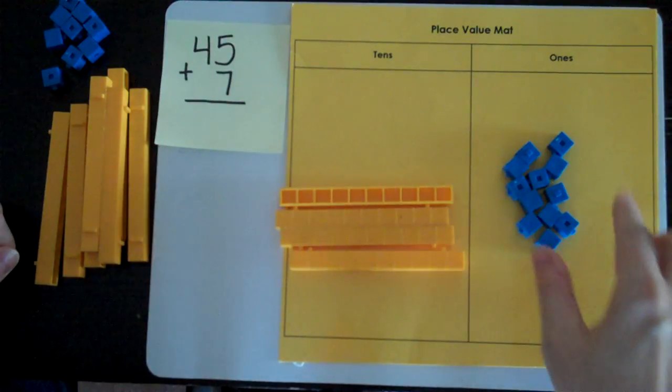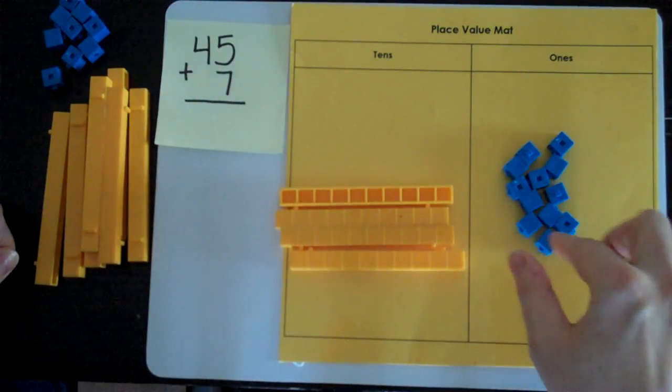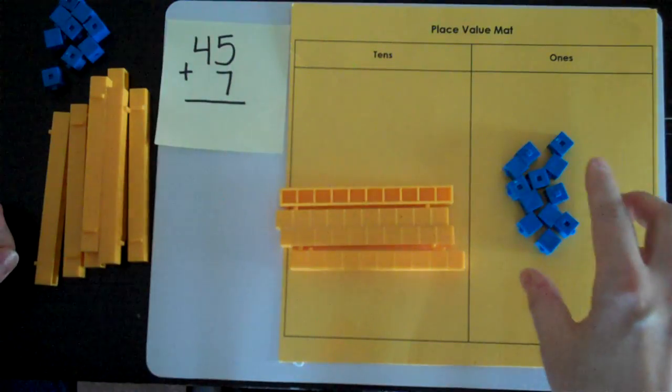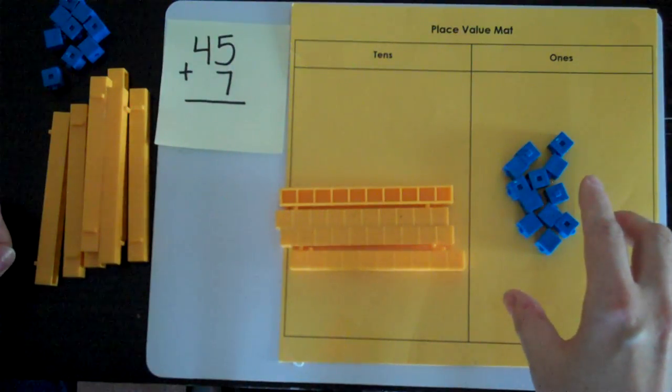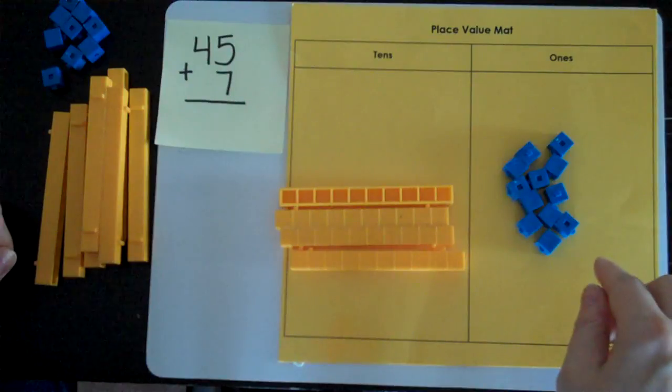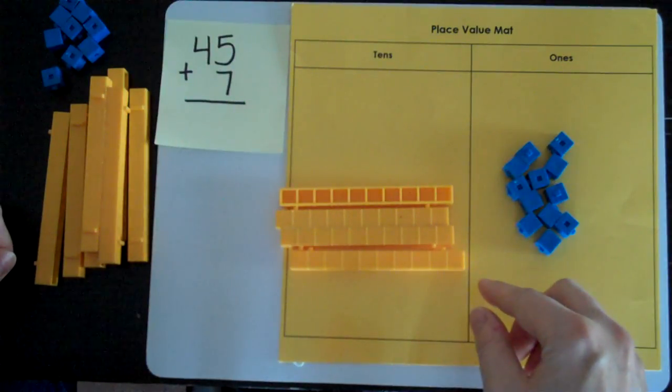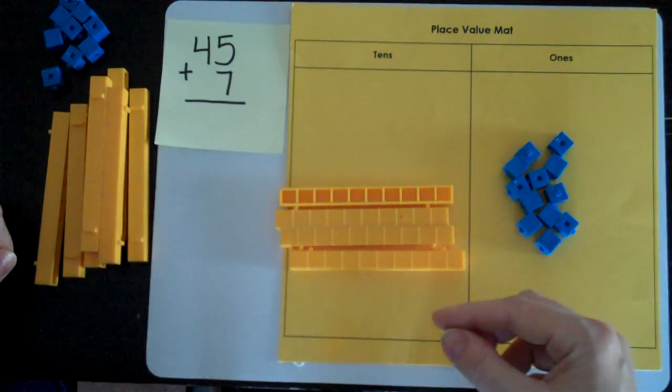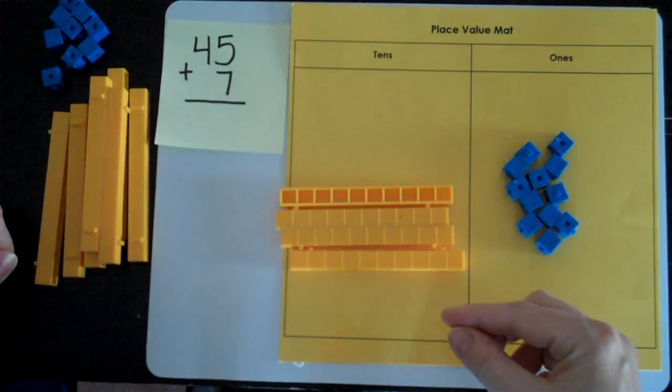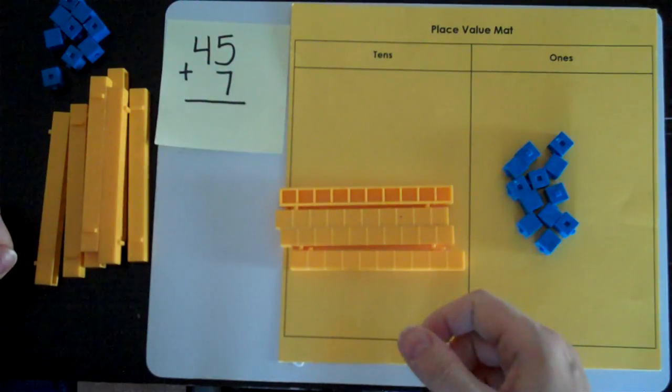I can have only zero to nine ones. Twelve is too many. So I have to trade ten ones for one ten.